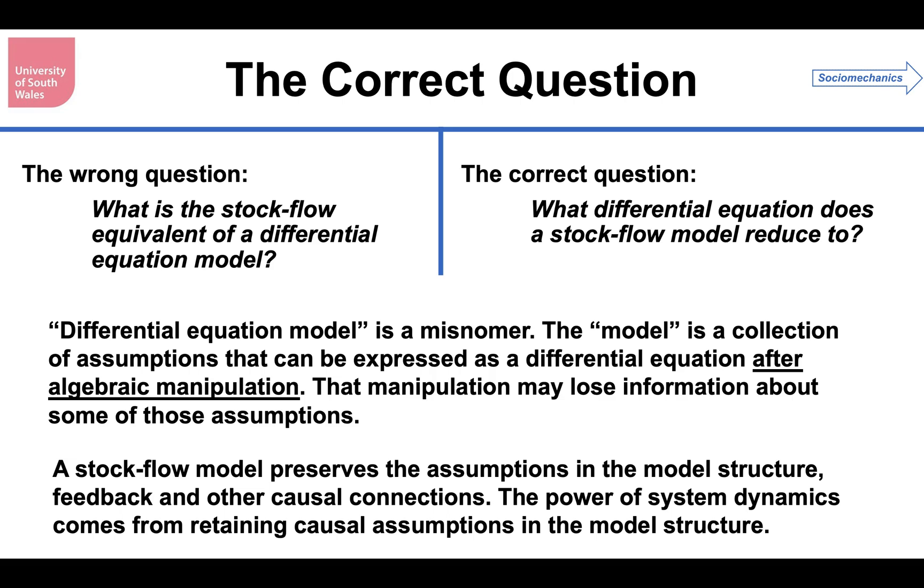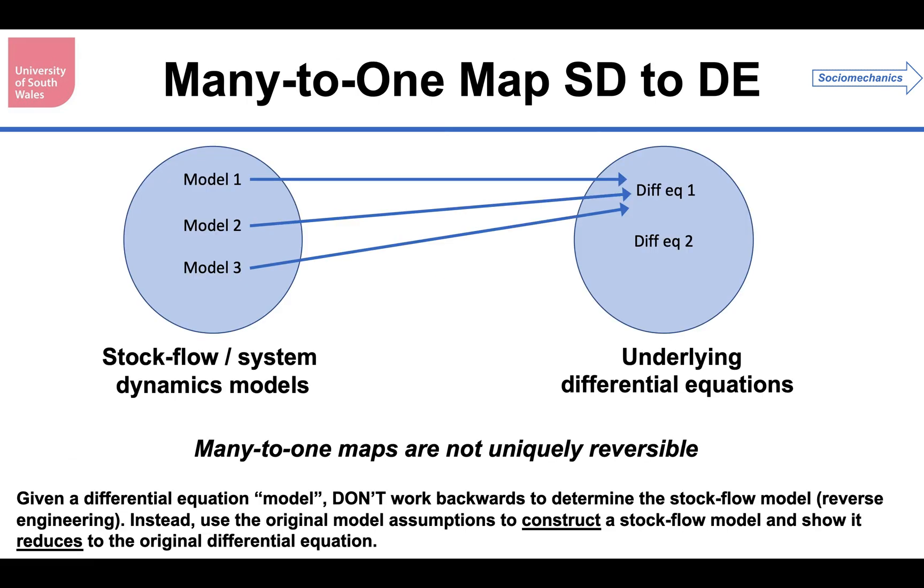That manipulation might lose information about some of those assumptions. Those assumptions are causal assumptions. But once you start simplifying the equation, as all mathematicians love to do, those assumptions, the causality that was used to construct the model, have been lost in the algebra. And that's what's happened when the logistic equation has been expressed, even though it might have started off as the Bass model. So a stock flow model, a system dynamics model as we would know it, preserves the assumptions in the model structure, the feedback and all the other causal connections. That's the power of system dynamics. It comes because it retains all the causal assumptions in the model structure.